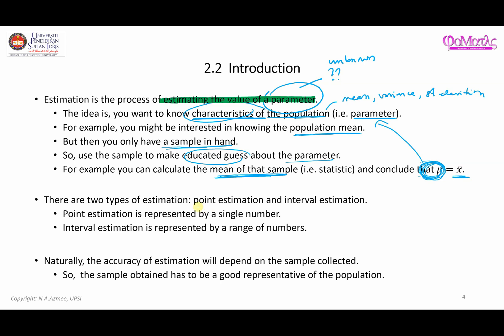Now there are two types of estimation. The first is point estimation, which is represented by one single number, and the second is interval estimation, which is represented by a range of numbers. Naturally, the accuracy of estimation depends on the sample collected, so it is always important that the sample obtained is a random sample that is also a good representative of the target population.